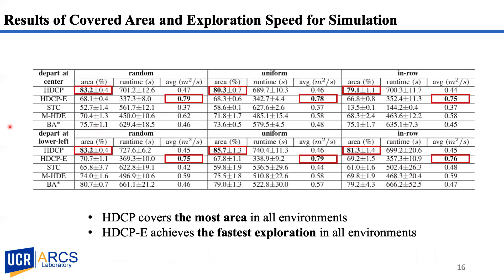This table contains means and standard deviations for the percentage of covered area over total free space, total algorithm runtime, and average exploration speed for each scenario over 10 trials. The results suggest that regardless of departing position, HDCP covers the most area in all evaluated environments. While the uniform and in-roll environments bounded by square walls are more regular and structured, HDCP still outperforms the other evaluated methods that use square grid discretization.